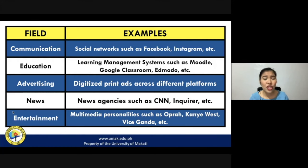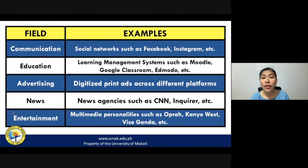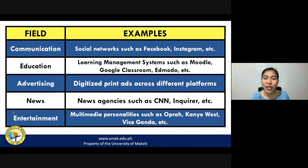In the field of news and reporting, news agencies such as CNN are already forms of media convergence. Back then, CNN was only available through television with a cable subscription. However, with the advent of the internet and social media, CNN and other news channels have created their own websites and even Facebook accounts, allowing them to regularly update people without requiring a cable TV subscription or even owning a TV. The same applies to local news counterparts.